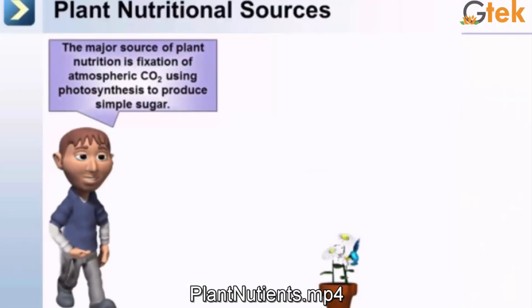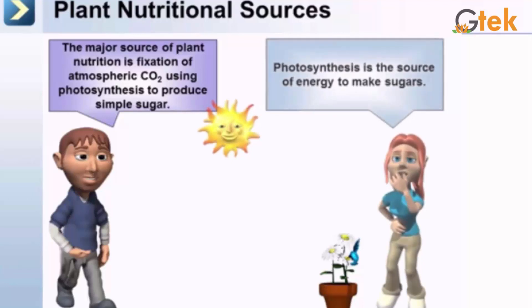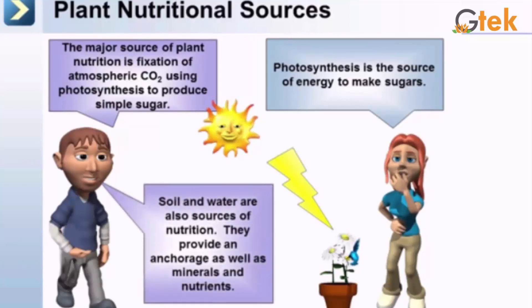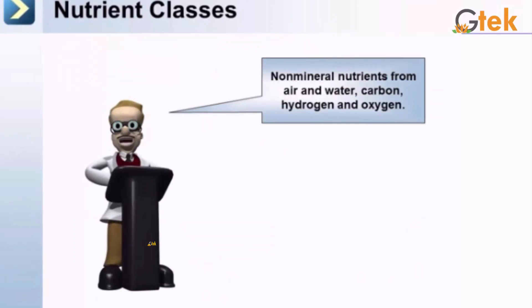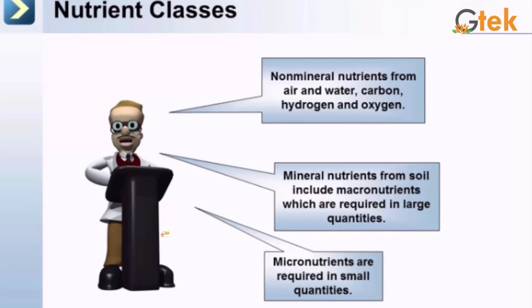Let us see about plant nutrients. The main nutritional source of the plant is fixation of atmospheric carbon dioxide through photosynthesis, which is the source of energy to make sugar. Soil and water are also sources of nutrition as they contain large amounts of minerals and nutrients. Non-mineral nutrients like carbon, hydrogen, and oxygen come from air and water, while mineral nutrients from the soil include macronutrients, required in large quantities, and micronutrients, required in small quantities.